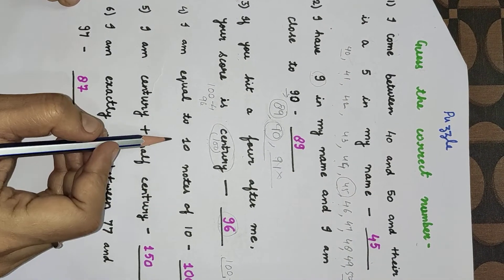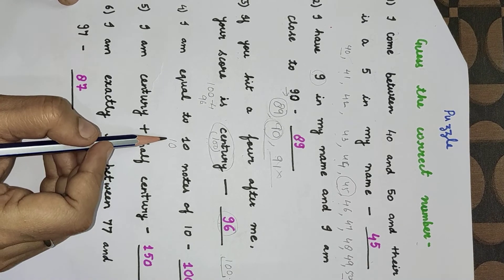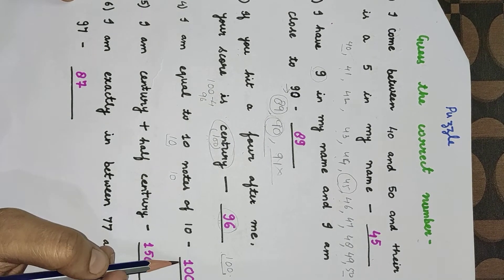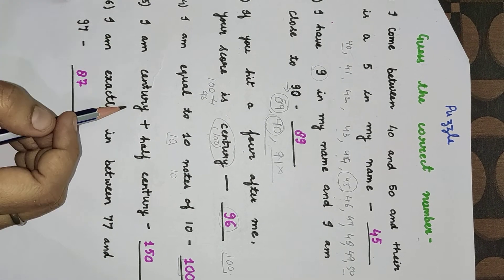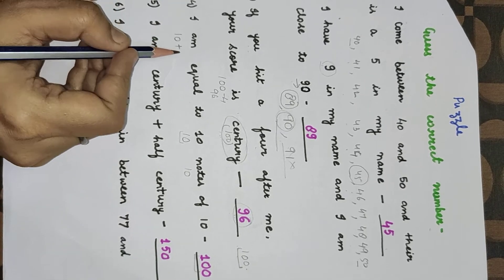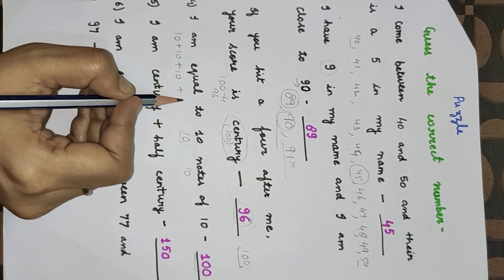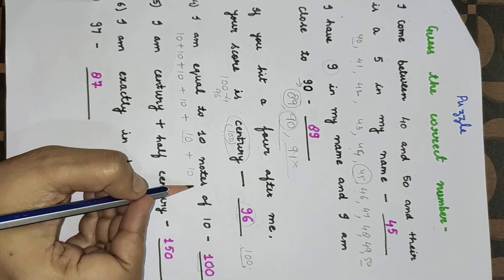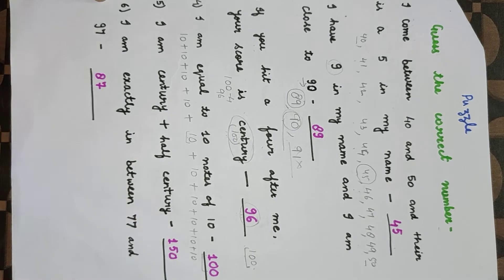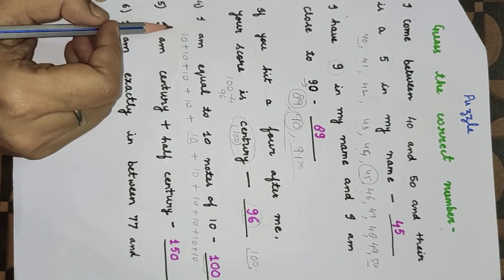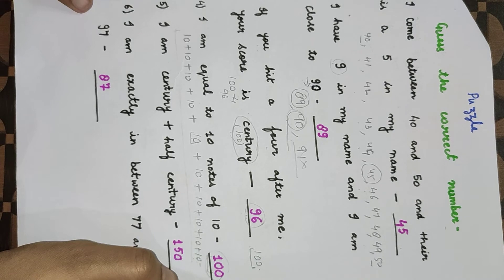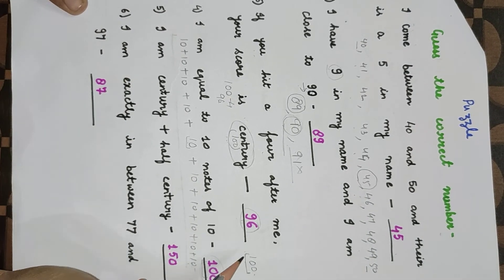And equal to 10 notes of 10. Suppose you have 10 notes of 10 — so how much do you have total? We add 10 notes of 10, counting 1 through 10 times. Total rupees will be 100. I am century — century is 100. Next: I am century plus half century. What is half of 100? It is 50. So century plus half century will be 150.